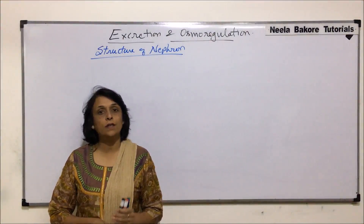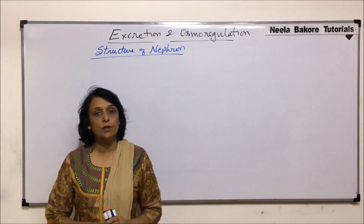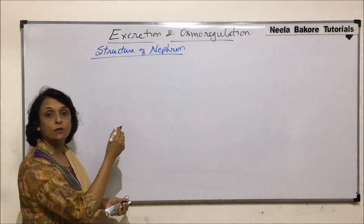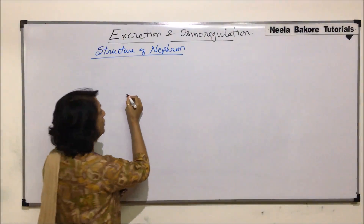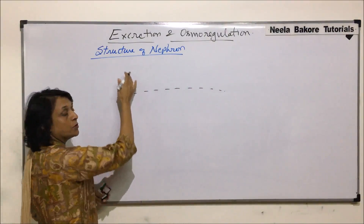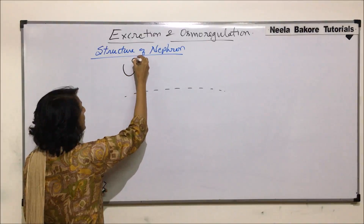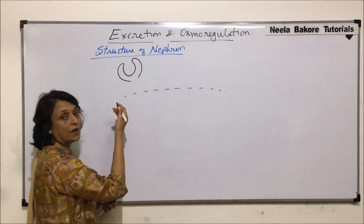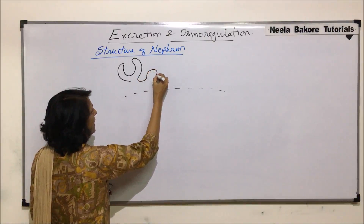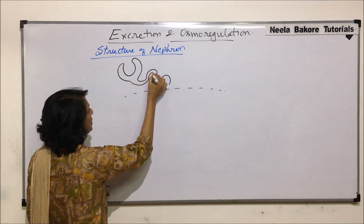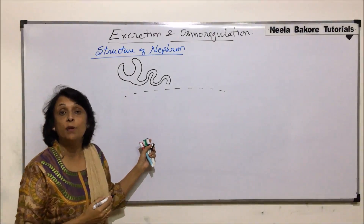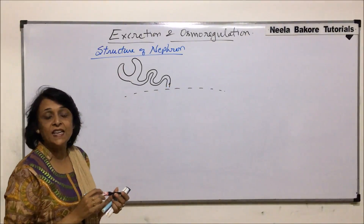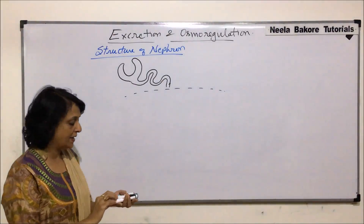In the previous section, we saw the detailed structure of Bowman's capsule, glomerulus and PCT. Now we'll continue after PCT, that is the loop of Henley. Let us quickly draw that diagram — here we are not showing the detail of Bowman's capsule. We made Bowman's capsule which is in the cortex part, with the double layer: the inner with podocytes and outer simple squamous epithelia. We also made the coiled part, that was the proximal convoluted tubule, lined with brush border epithelia. We will continue from here — the PCT leading into the loop.